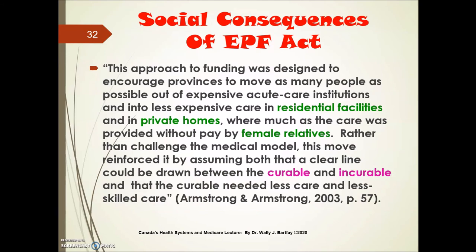What are some social consequences of this EPF? According to Armstrong and Armstrong, this approach to funding was designed to encourage provinces to move as many people as possible out of expensive acute care institutions and into less expensive care in residential facilities and private homes, where much of the care was provided without pay by female relatives typically. Rather than challenge the medical model, this move reinforced it by assuming both that a clear line could be drawn between the so-called curable and incurable patients, and that the curable needed less care and less skilled care.